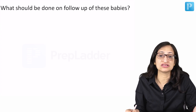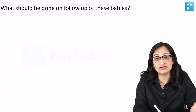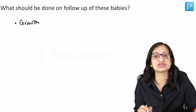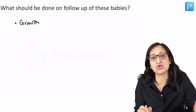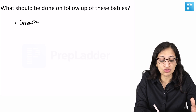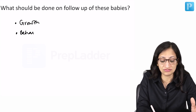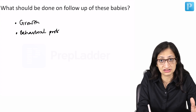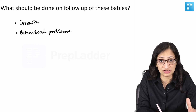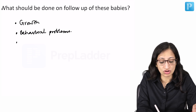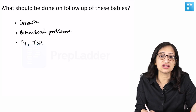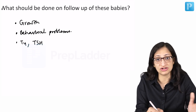What should be done on the follow-up of these babies? As with any child, you will assess growth at each visit. Down syndrome specific growth charts are available because these children are not expected to grow like normal children. You will also do a behavioral assessment at each visit, and you need to look at the thyroid profile at regular intervals — T4 and TSH levels — to identify congenital hypothyroidism and institute management if needed.